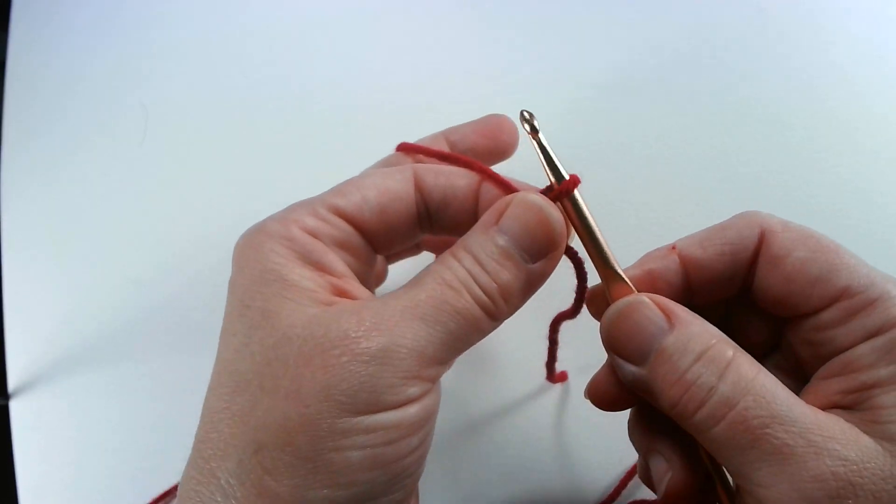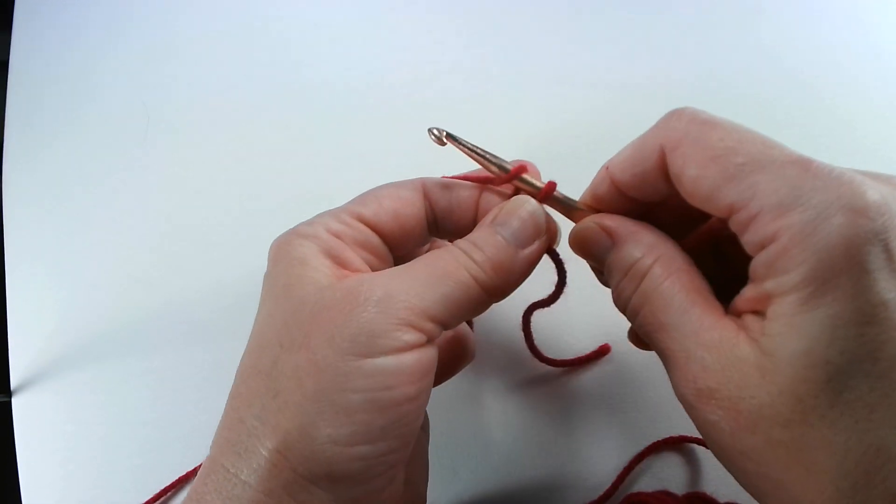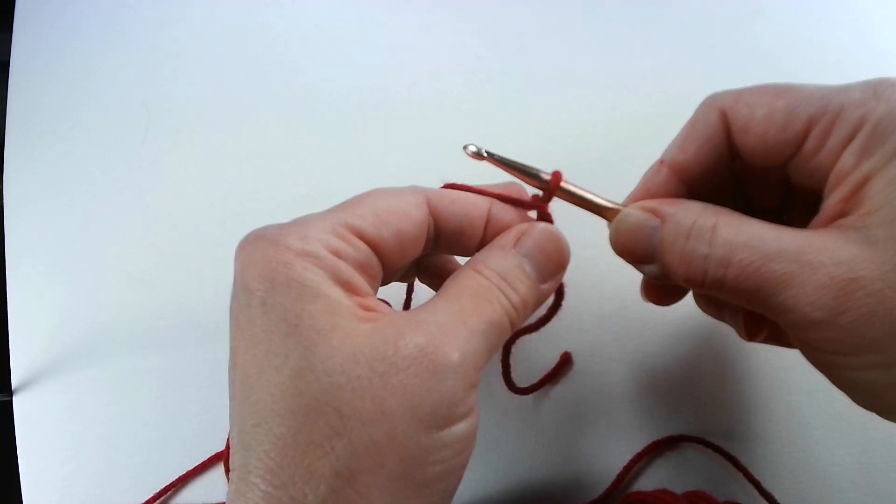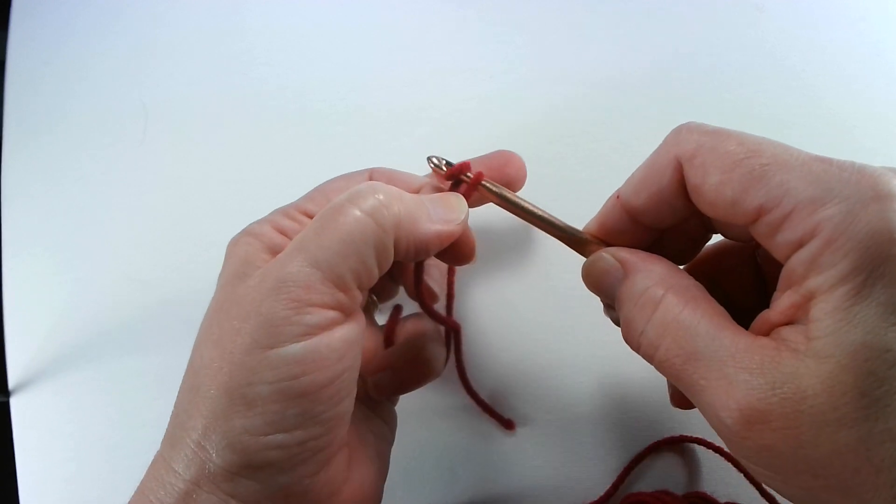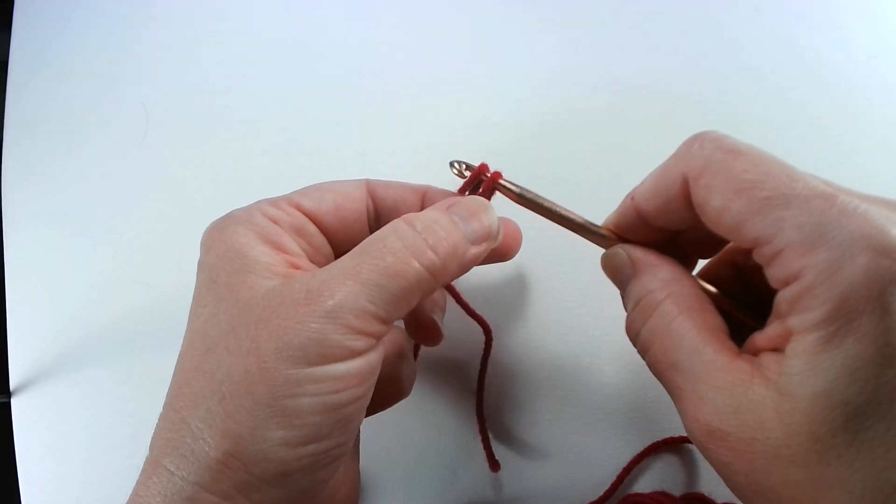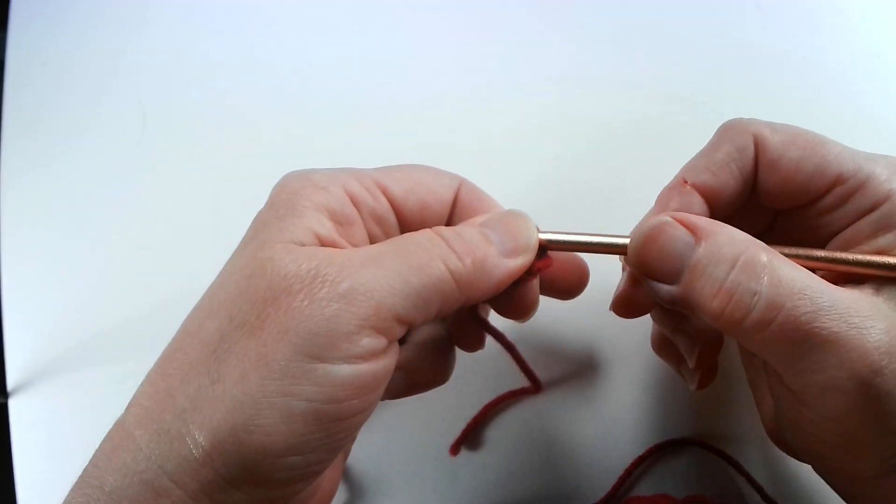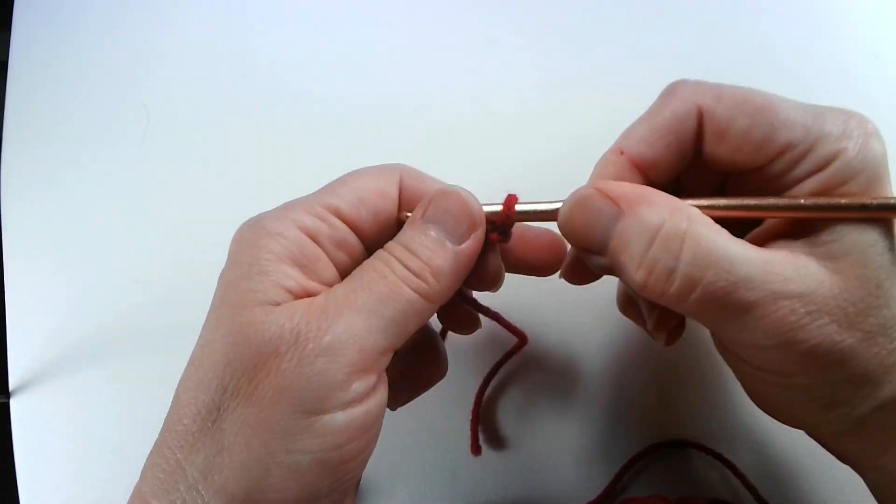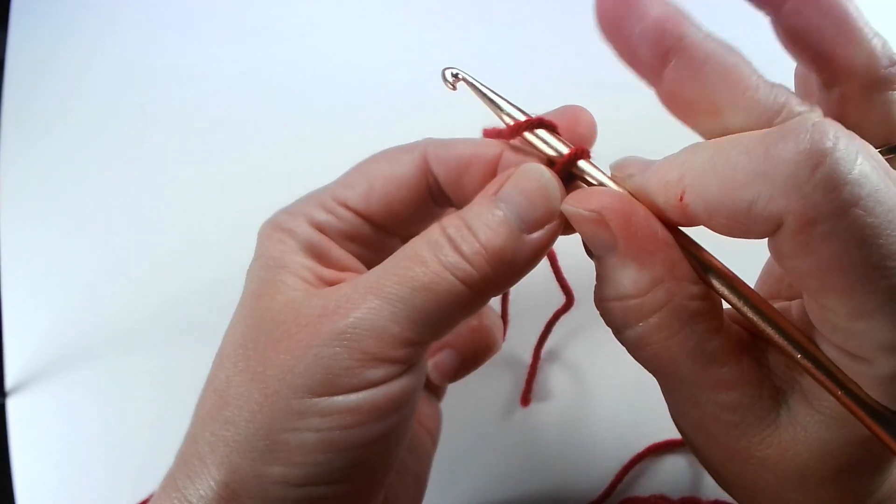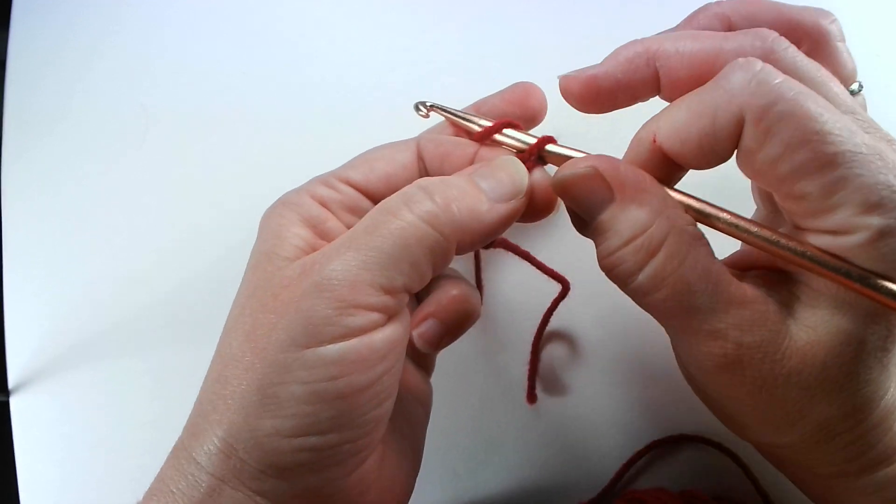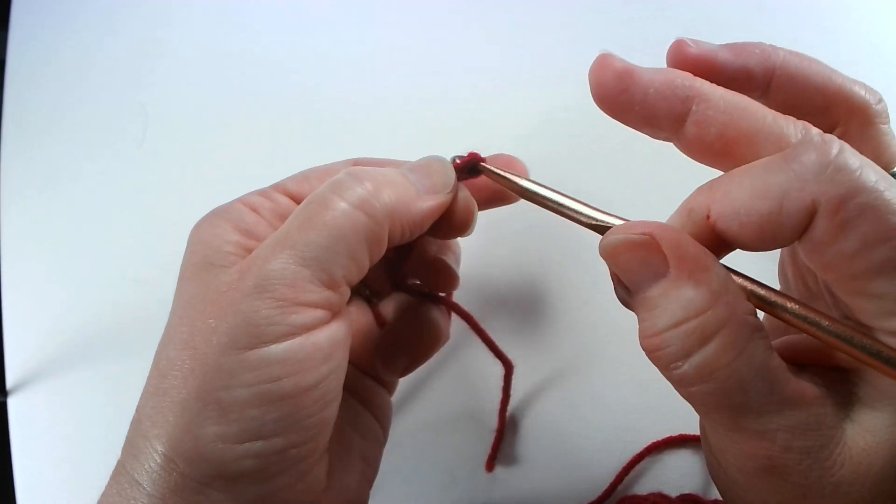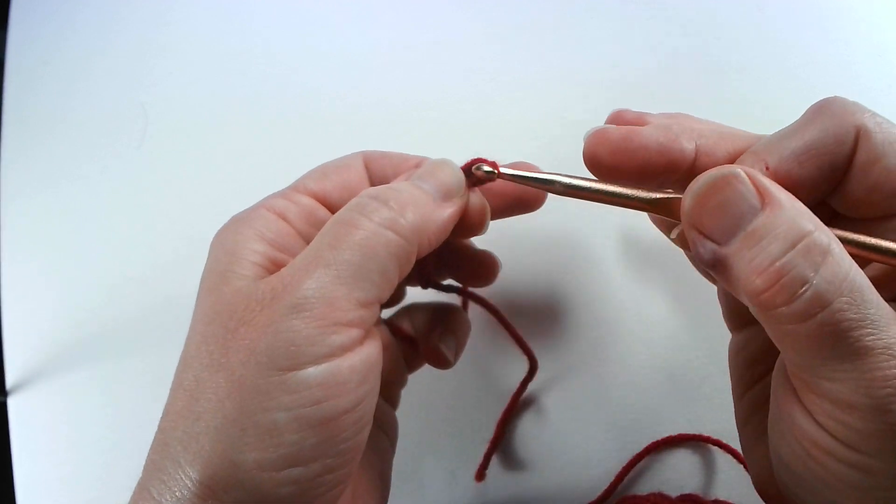For a basic chain, you take your hook, you wrap the yarn around your hook and you bring it through the loop. You have another loop on your hook. Wrap around and bring through your loop. I usually hold my crochet hook like this. Some people hold them like this. And then I use this finger to hold my yarn on this hand because it will move around and it helps keep a steady tension. So you see I very smoothly pulled my yarn through.